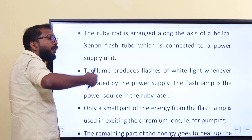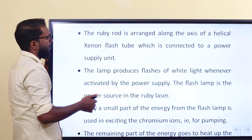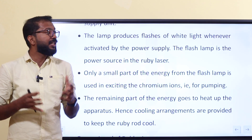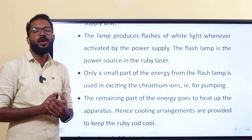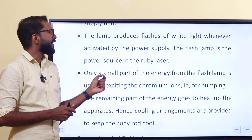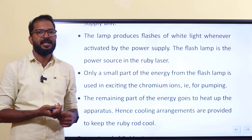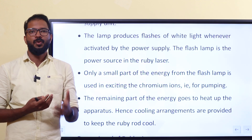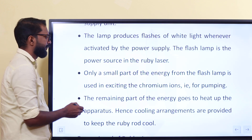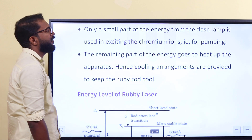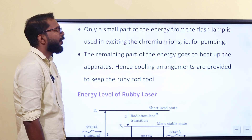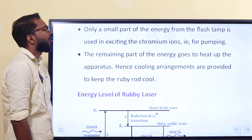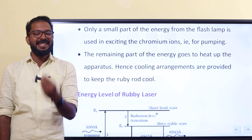The ruby rod is arranged along the axis of a helical xenon lamp tube which is connected to a power supply. The xenon lamp produces flashes of white light whenever it is activated by the power supply. The flash lamp is the power source in the ruby laser. Only a small part of the energy from the flash lamp is used in exciting the chromium ions for pumping.